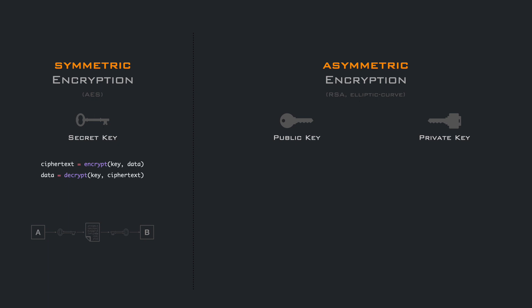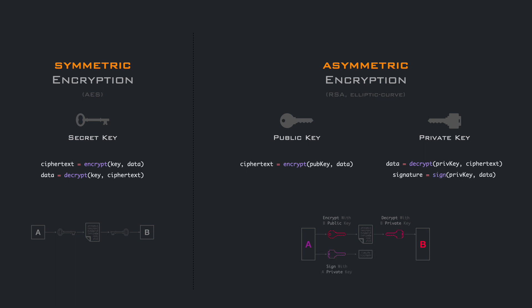When someone wants to send a secure message, they use the recipient's public key to encrypt it. The encrypted message can only be decrypted by the recipient that has the private key. Asymmetric encryption also enables digital signatures, where the sender can use his private key to sign a message, and anyone that has the sender's public key can verify the authenticity. Having two separate keys allows secure communication, authentication, and integrity.